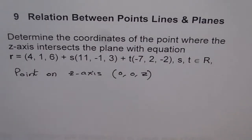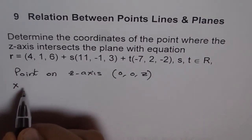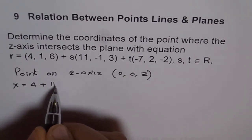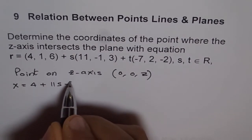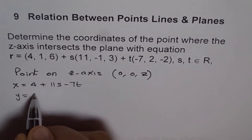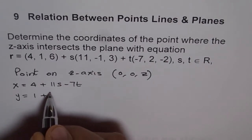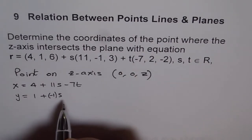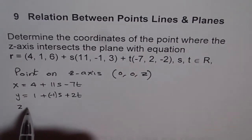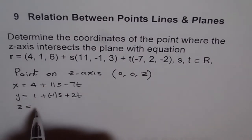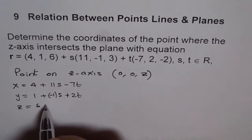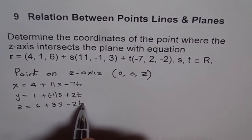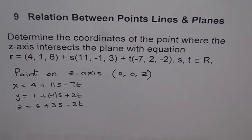Let us first write them in parametric form. We have x point in general on a plane will be given as 4 plus 11s minus 7t, and the y point will be given as 1 minus s plus 2t, and z is equal to 6 plus 3s minus 2t. So that is the point in general on our plane.